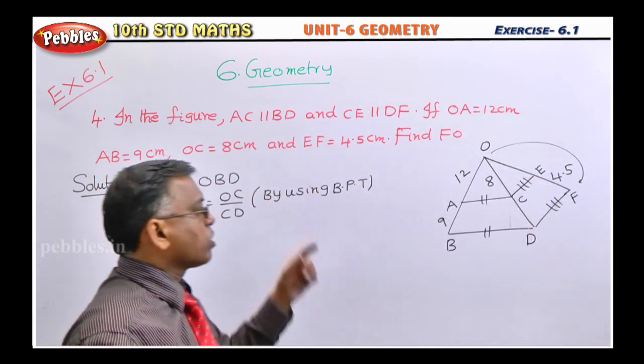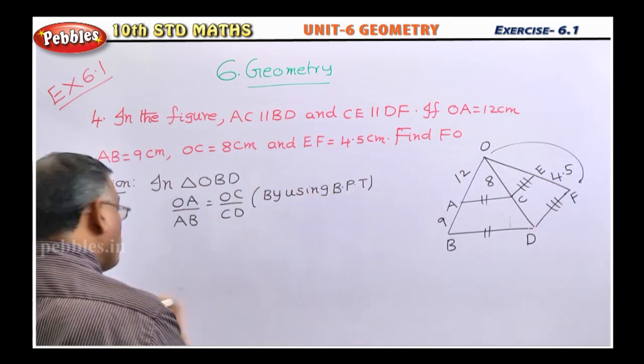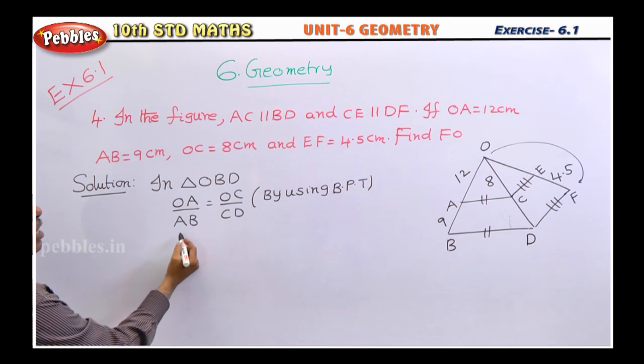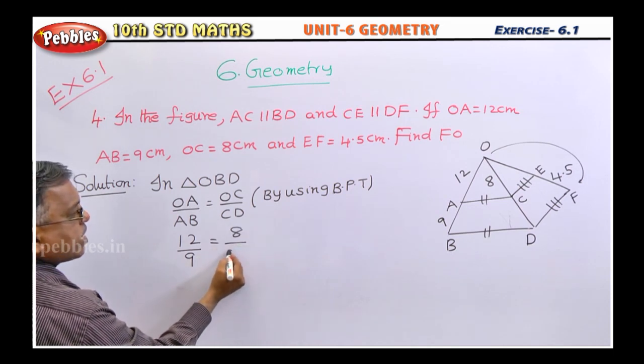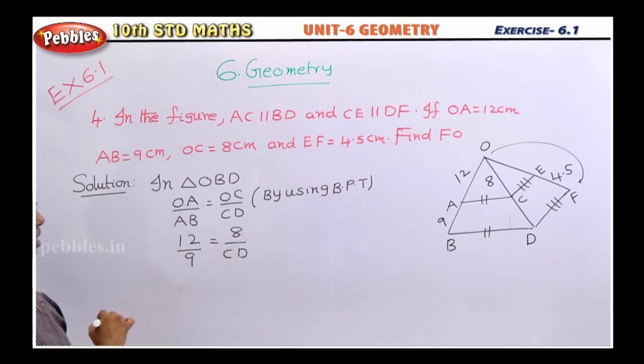Students, listen. In triangle OBD, OA by AB. What is OA? 12. What is AB? 9. Is equal, what is OC? 8. What is CD? We don't know. Let it be there.